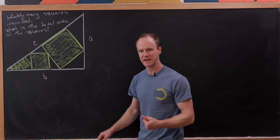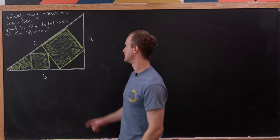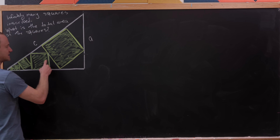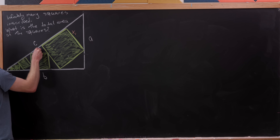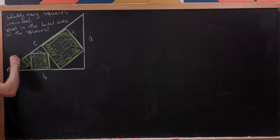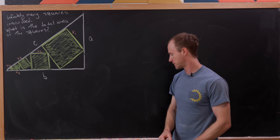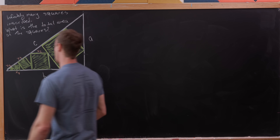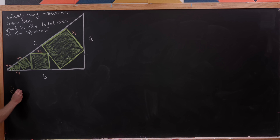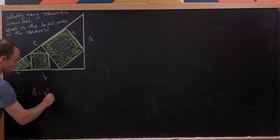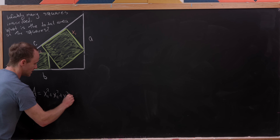Before we get started, let's introduce a bit of notation. The side lengths are A, B, and C, and the squares have side lengths X1, X2, X3, X4, X5, and so forth, trailing off infinitely small. Our goal is the sum of the squares of these X_i's — the total area of all the squares: X1² + X2² + X3² + ···